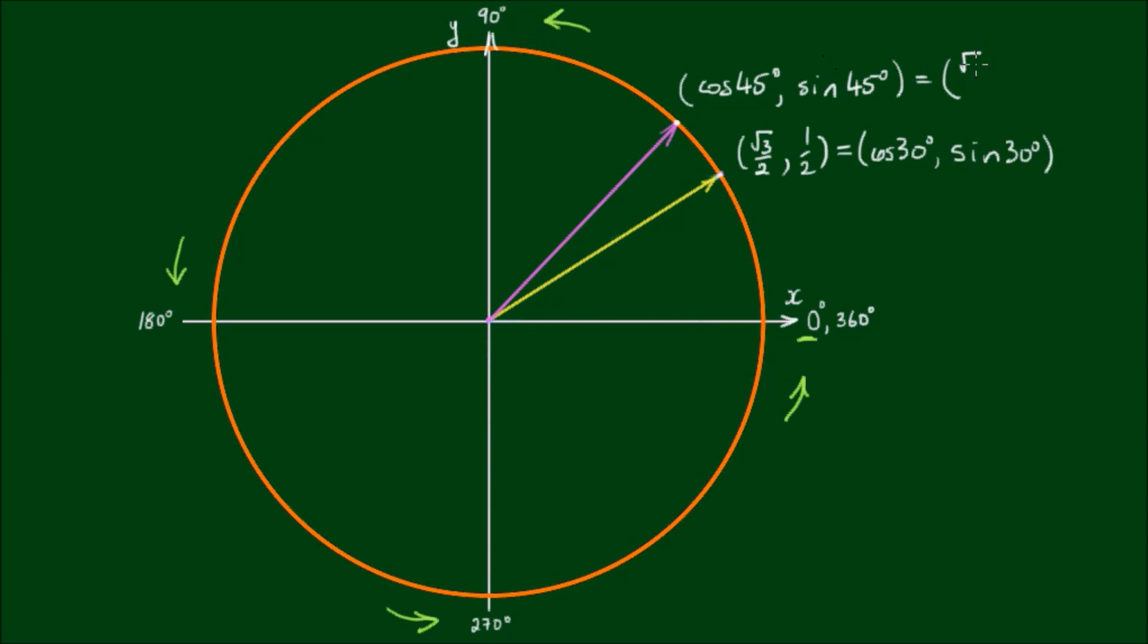And we do the exact same thing to show where cos of 60 degrees and sin of 60 degrees lie on the unit circle. So cos of 60 is equal to 1 half and sin of 60 is equal to root 3 on 2.